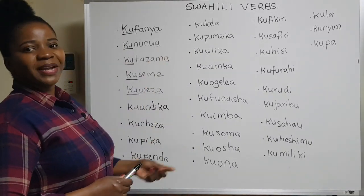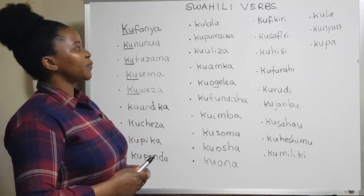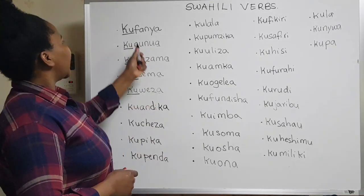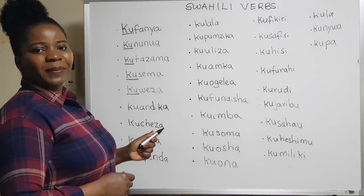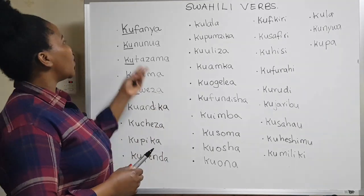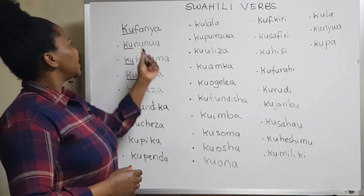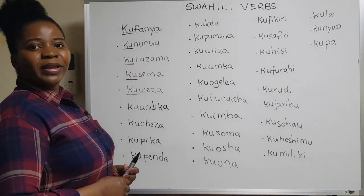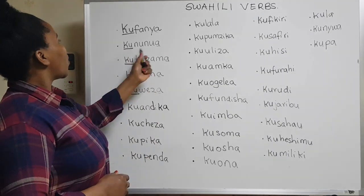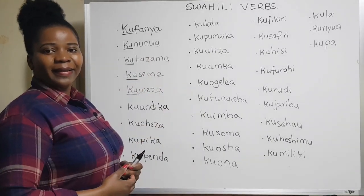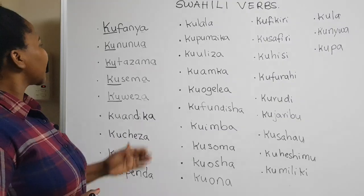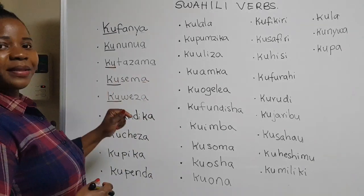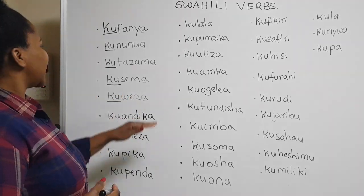As you can see here, all verbs start with 'ku.' 'Ku' means 'to.' So 'kufanya' is 'to do' and the root is 'fanya,' meaning 'do.' 'Ku' is the infinitive. 'Kununua' is 'to buy' and 'nunua' is 'buy.' 'Kutazama' is 'to watch' and 'tazama' is 'watch.'